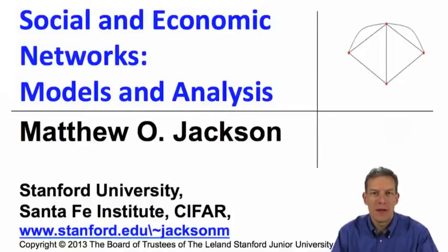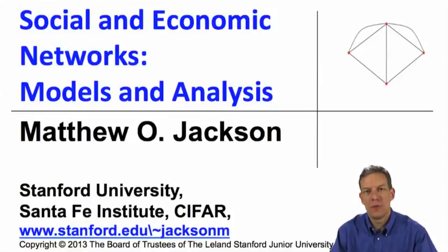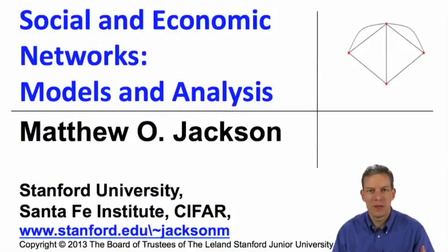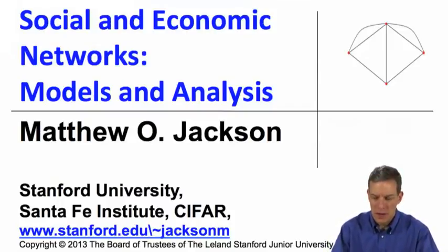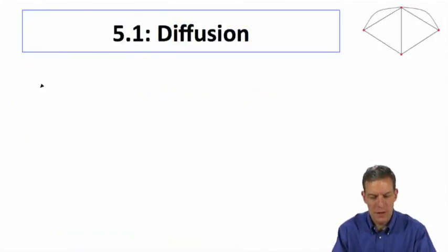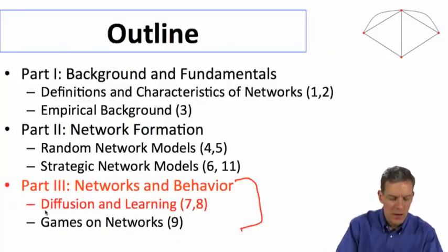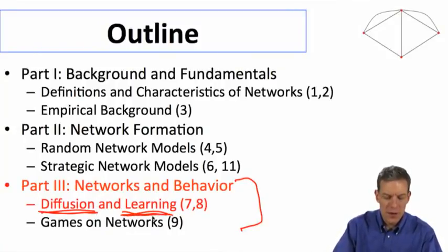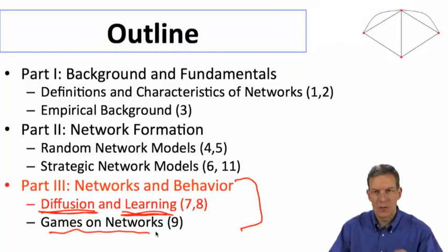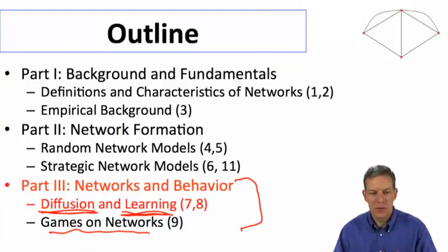We're now ready to start looking at the last major part of the course: understanding how networks influence behaviors. Taking the networks as given and understanding their implications for behaviors. We'll start with diffusion, then talk about learning, and then discuss situations where what I do actually depends on what my neighbors are doing, so there's some strategic interaction going on.